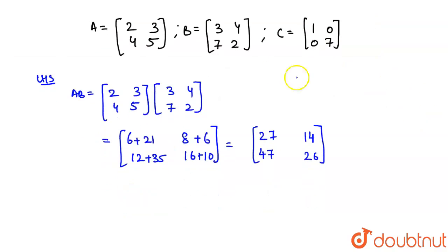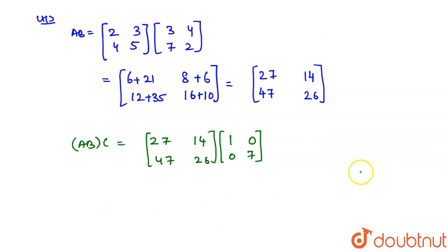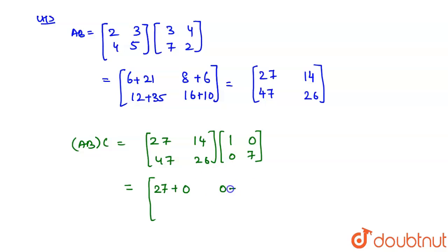Now multiply AB with C. So (AB)C equals [[27,14],[47,26]] multiplied by [[1,0],[0,7]]. Element (1,1) = 27×1 + 14×0 = 27. Element (1,2) = 27×0 + 14×7 = 98.